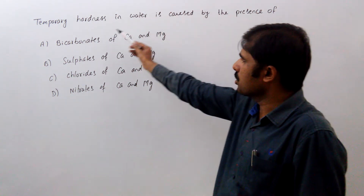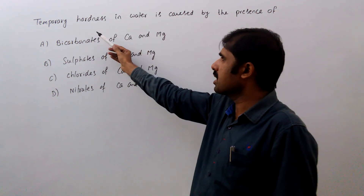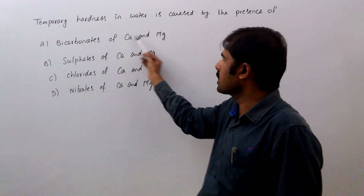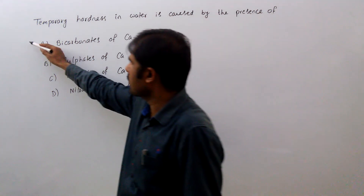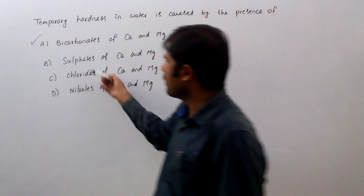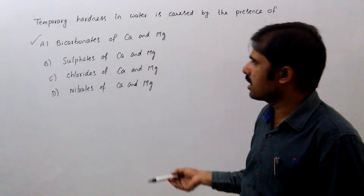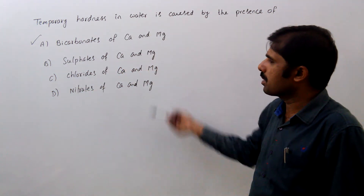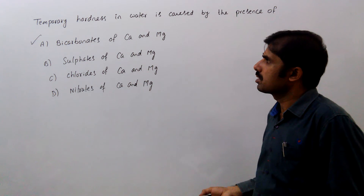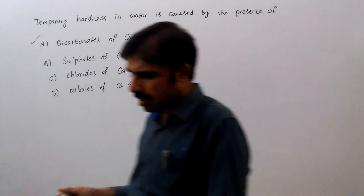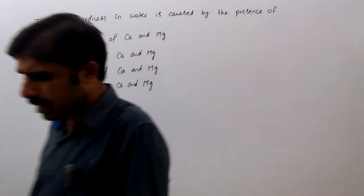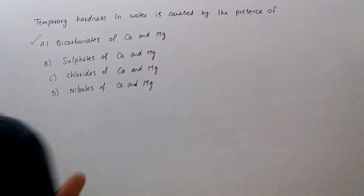Temporary hardness is due to carbonates and bicarbonates of calcium and magnesium, so option A is the correct one. Sulfates, chlorides, and nitrates cause permanent hardness. Temporary hardness is due to carbonates as well as bicarbonates, and here in option A, bicarbonates is given — so option A is correct.